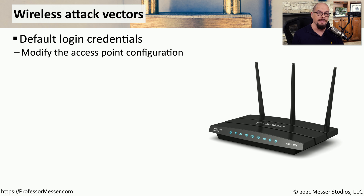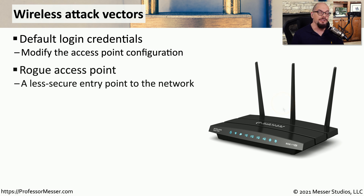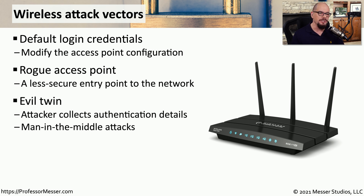On wireless networks, there are a number of attack vectors you have to be aware of. You have to make sure that your access point is secure — these usually have usernames and passwords to authenticate the administrator, and you want to be sure you're not using the default credentials, which will be very easy for an attacker to use. You also have to make sure that your network is not designed to allow rogue access points — someone who brings in an unauthorized wireless access point and plugs it in, effectively turning on a wide open access point that anyone would be able to connect to. A more malicious form of a rogue access point is an evil twin, which is specifically designed to be a hacking tool and is made to emulate or look very similar to the access points already on your network.